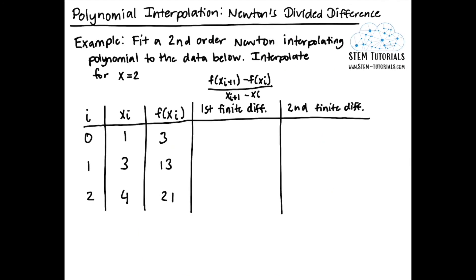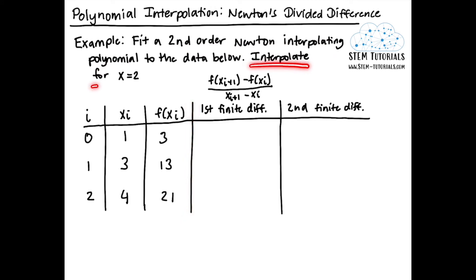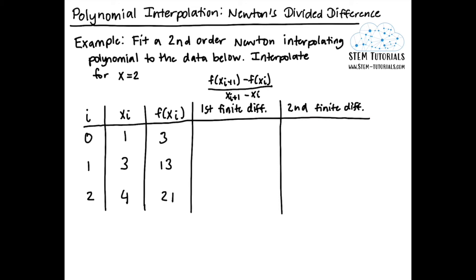Having covered the background, let's solve an example together. We're asked to fit a second order Newton interpolating polynomial to the given data, and then interpolate for x equals 2. For a second order polynomial we need three data points, which are provided in the table with subscript i, x data, and corresponding f(x) data. To solve by hand, I recommend extending your table with a first finite difference column and a second finite difference column.